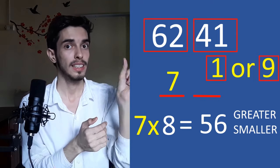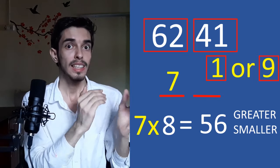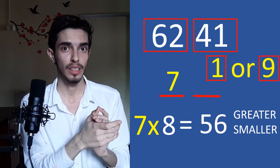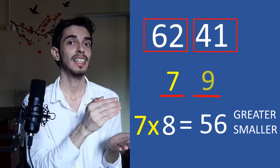So, in our case we have 56 and the first two digits are 62. So, this is lower one. Then, we will go with the higher option which is we have 1 or 9. So, 9. So, our answer is 79.